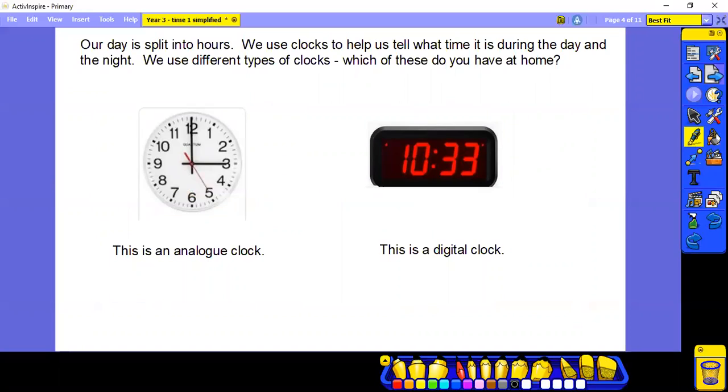So now we're going to move on to clocks. Our day is split into hours. We use clocks to help us tell what time it is during the day and night. And we use different types of clocks. So before we carry on, which of these do you have at your home? Have a look at these. Do you have these types of clocks in your home? You might have these on a watch. And do you have these types of clocks?